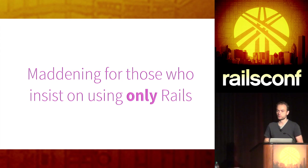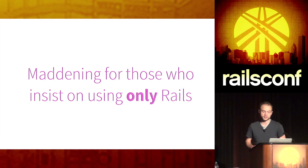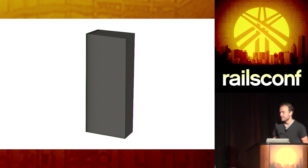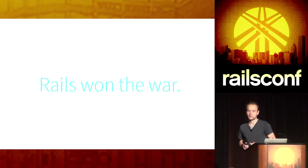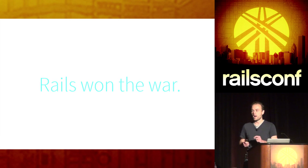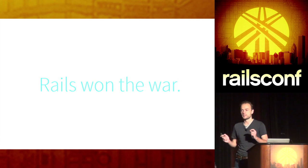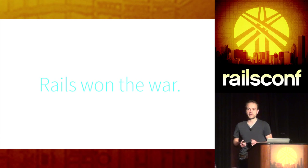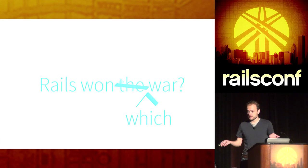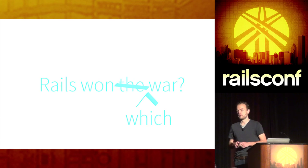This is maddening for those who insist on only using Rails for absolutely everything. But speaking of Rails, let's talk about monolithic application architecture. Rails won the war on web application frameworks. It came in with a whole bunch of great reasons why it was just the best. All these frameworks since then have adopted a ton of great ideas from Rails. But what we don't often think about is: which war did Rails win? All web applications generally? Or is there some subset of applications for the web that are a better fit for Rails than others?